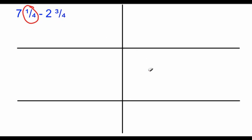When we get down to this box and we're subtracting our fractions, we can't do 1 fourth minus 3 fourths because this is a smaller fraction. What we need to do is take our first number and rename it so that it has a bigger fraction.